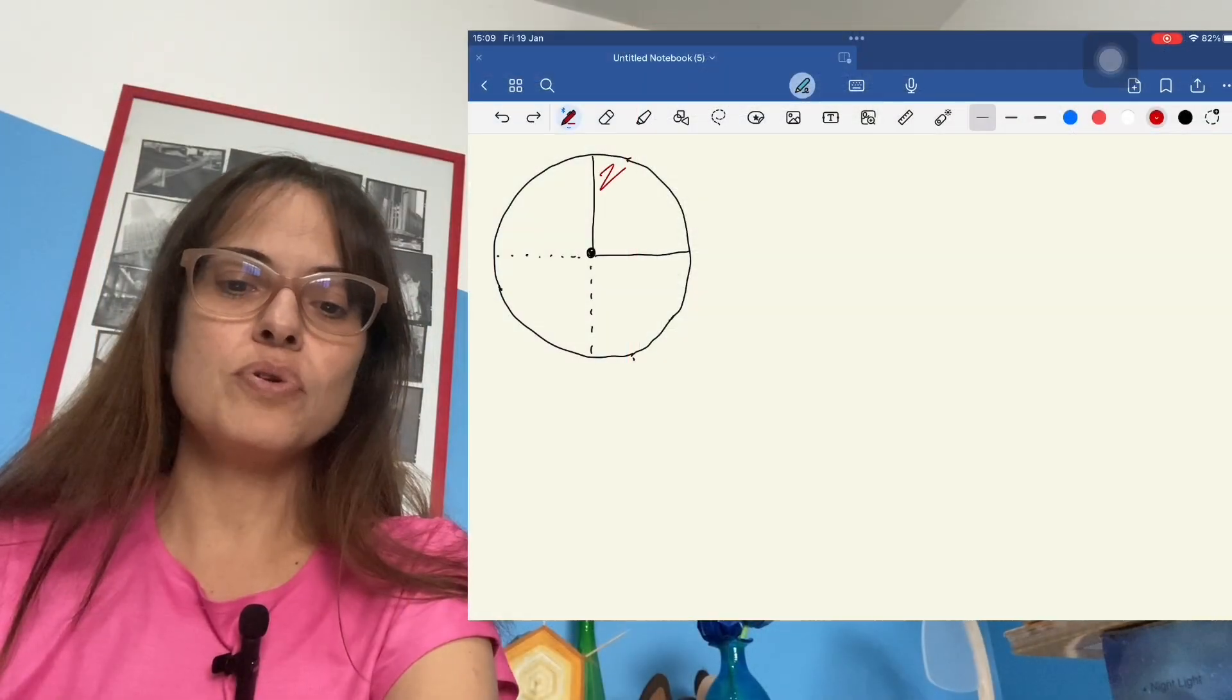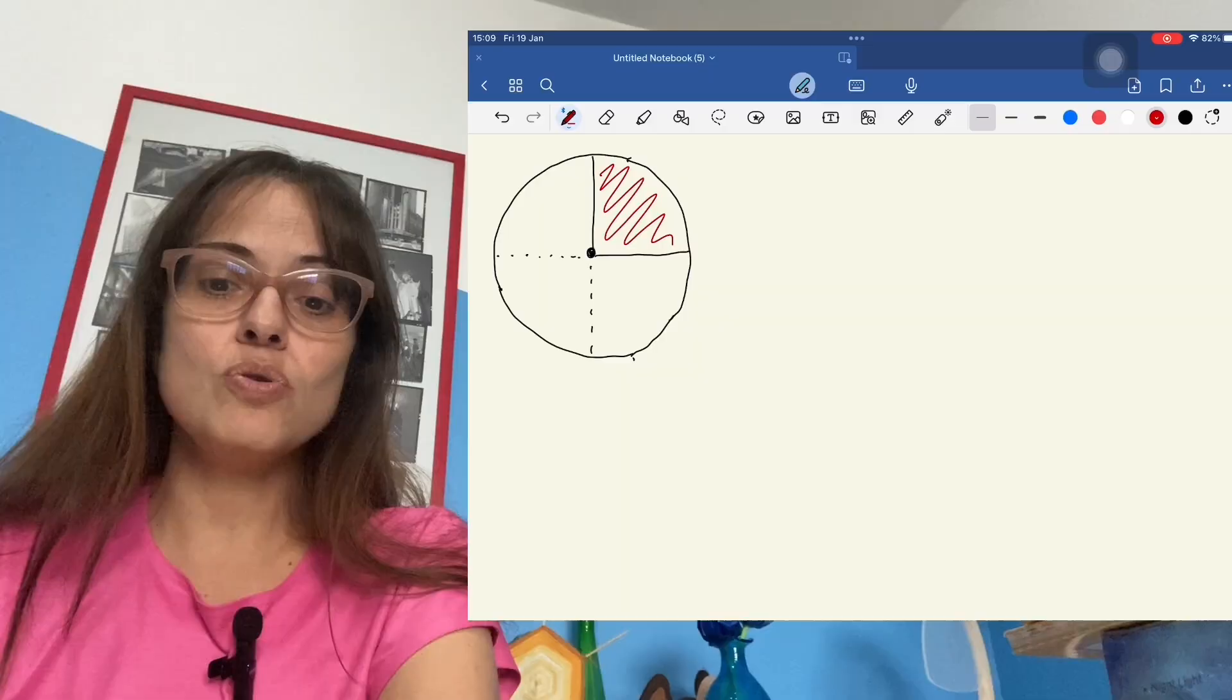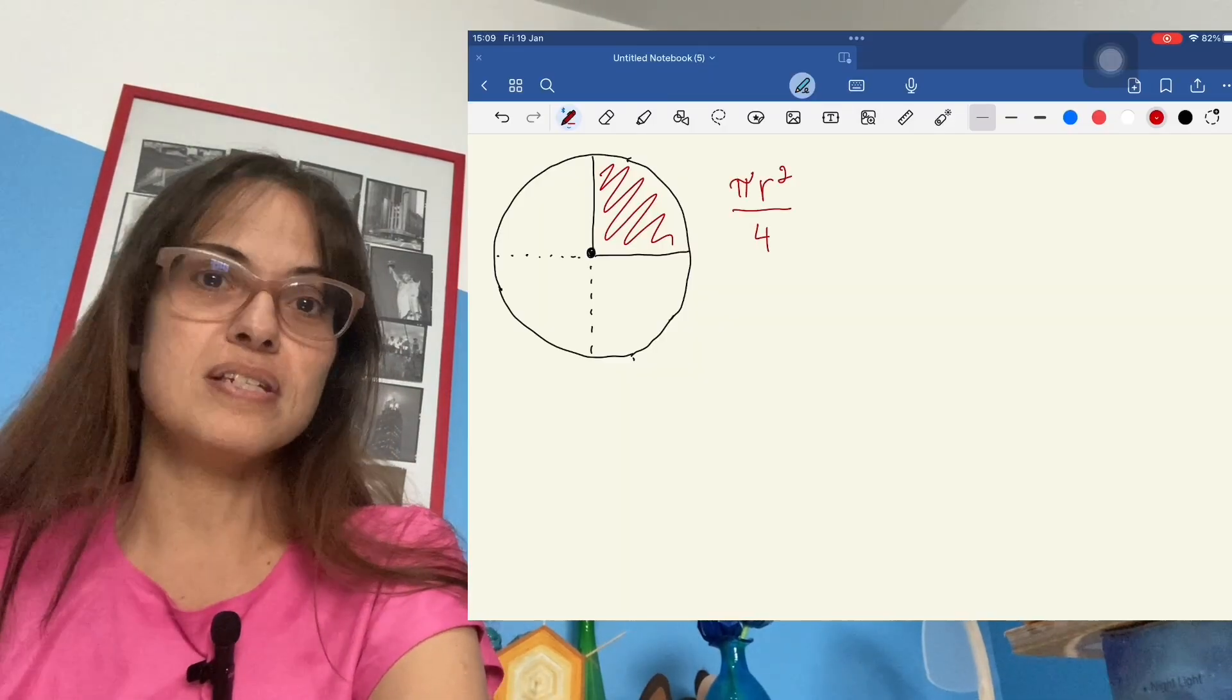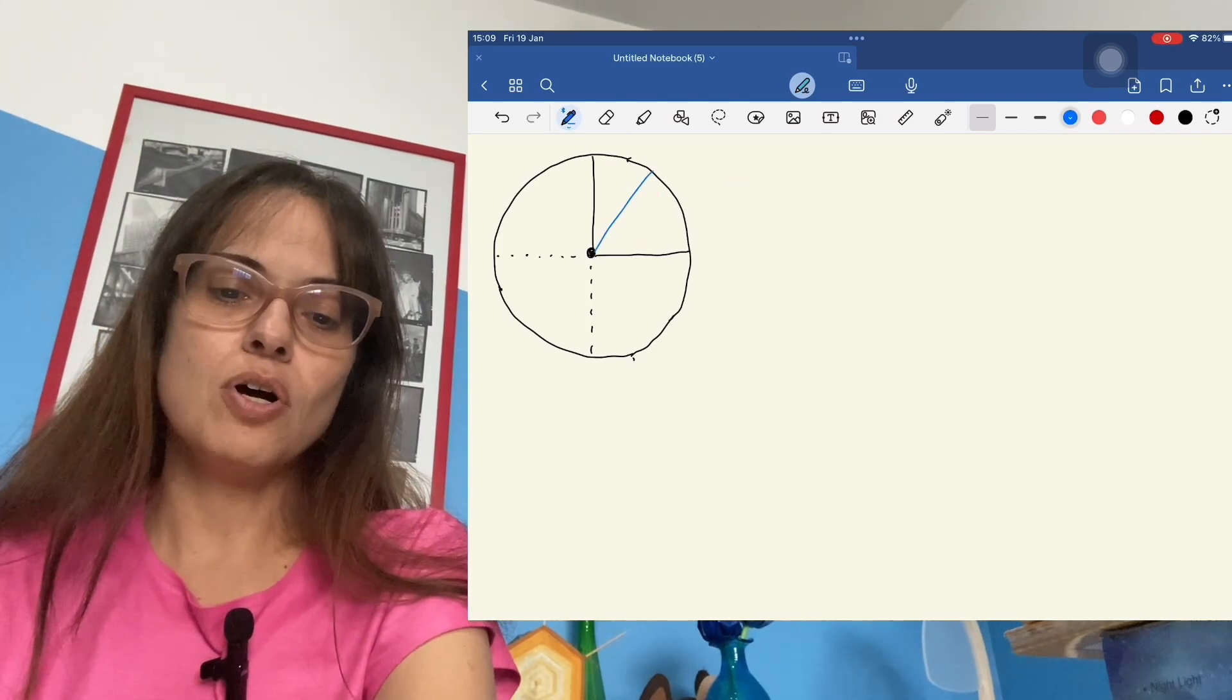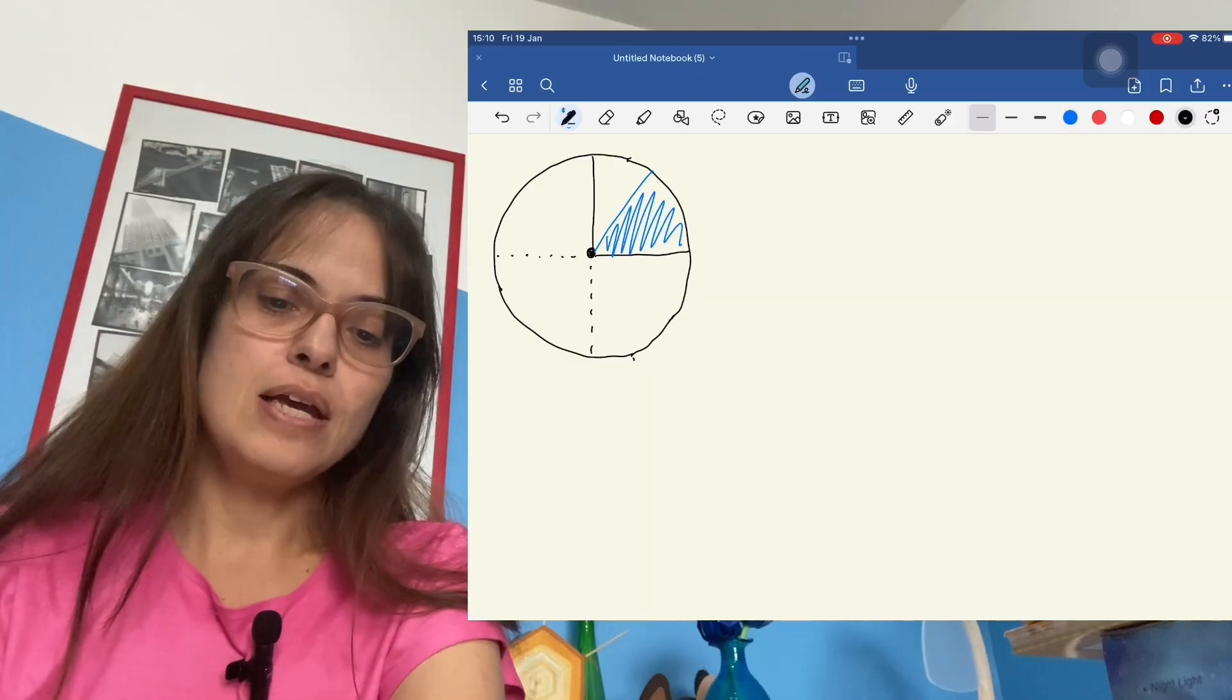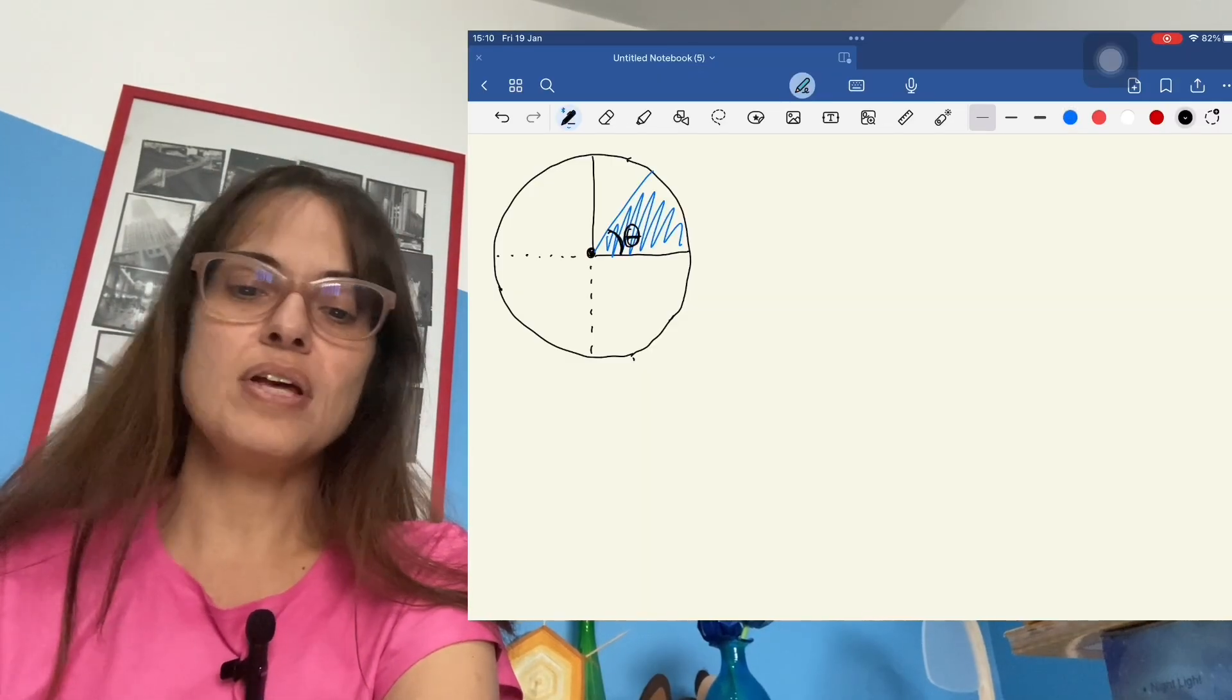If I were to ask you for the area of this sector, there is not much to do - that is just the area of the circle divided by four, because that sector is one quarter of the circle. If I asked you for the area of a different sector, then you would have to know the angle of the sector right here, and then there is a formula for that area.